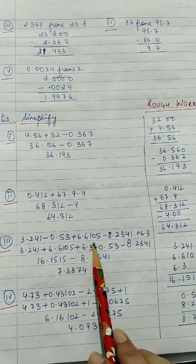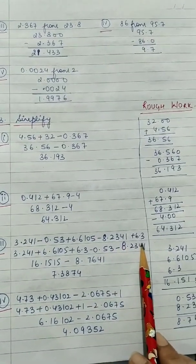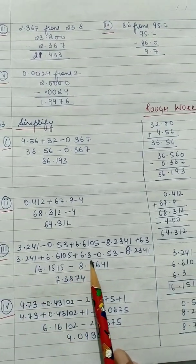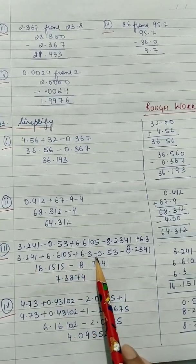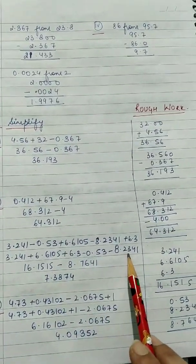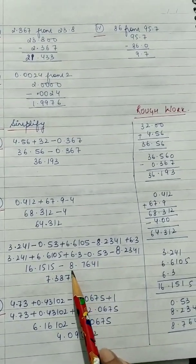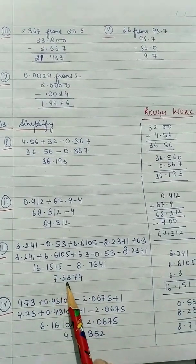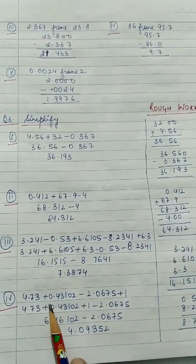Third part: 3.241 minus 0.53 plus 6.6105 minus 8.2341 plus 6.3. First write all the positive terms together and all the negative terms together. When you add the three positive terms, you get 16.1515. When you add the two negative terms, you get 8.7641. Now subtract them and you will get 7.3874.